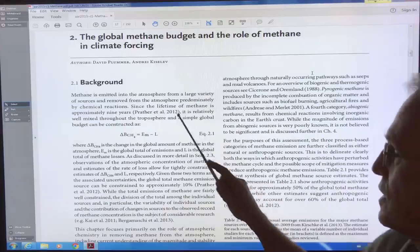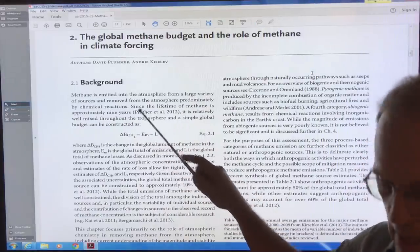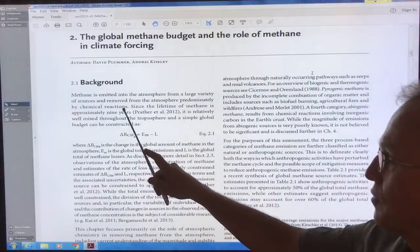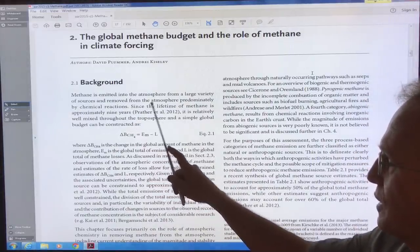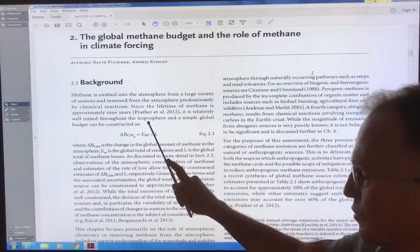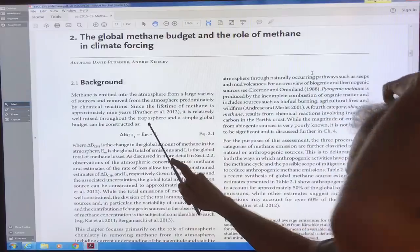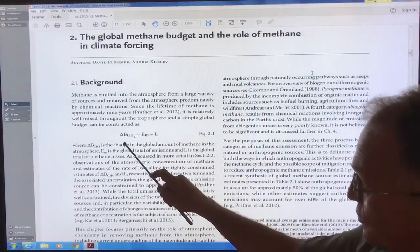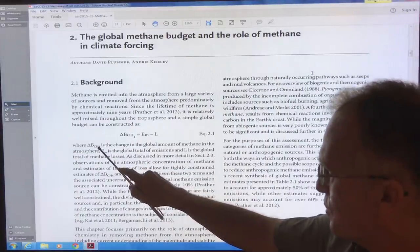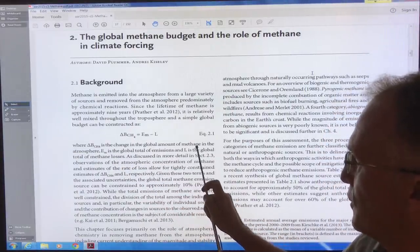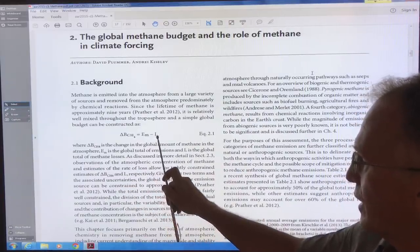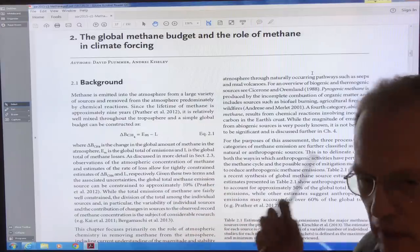There's a whole bunch of sources and not so many sinks, but it's mostly chemical reactions that remove methane from the atmosphere. The lifetime of methane is about nine years. It's well mixed in the troposphere, which is lower atmosphere and a global budget can be constructed. This is the change in the methane. Delta BCH4 is a change in the global amount of methane in the atmosphere. EM is global total emissions and L is the global total of methane losses.